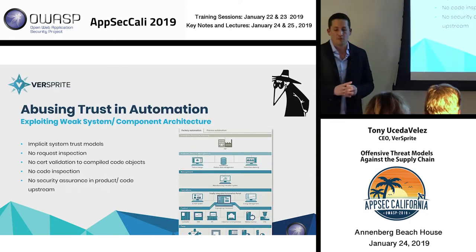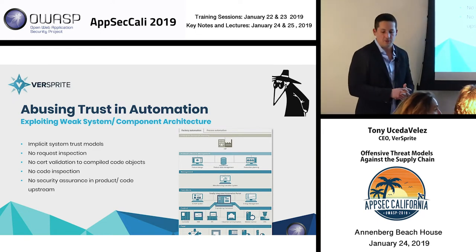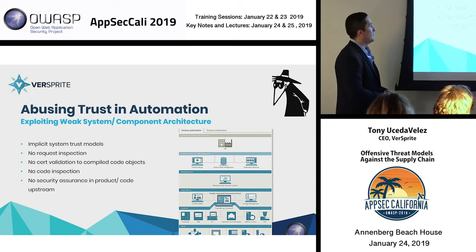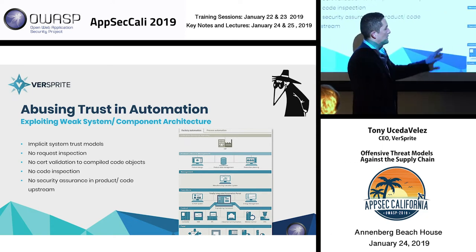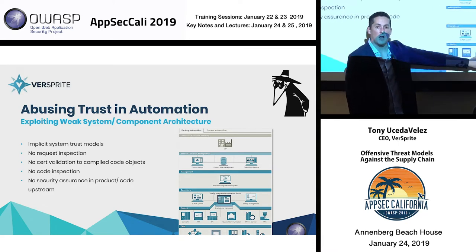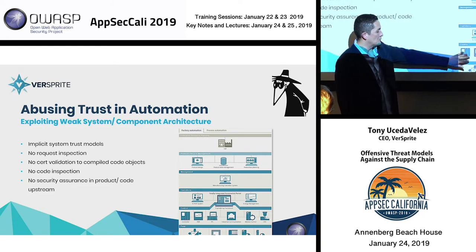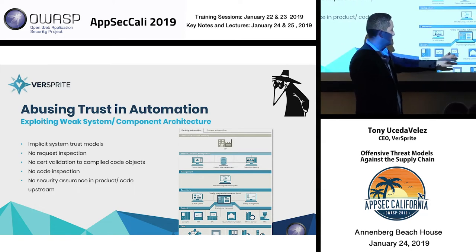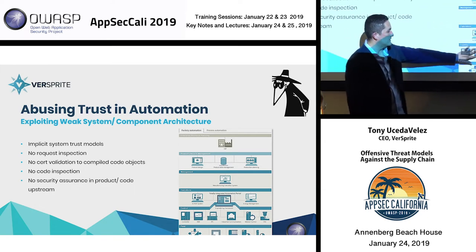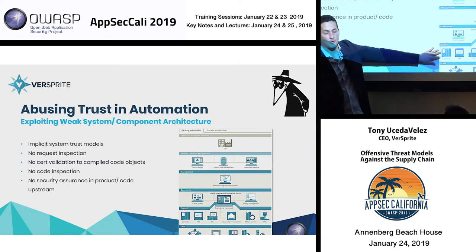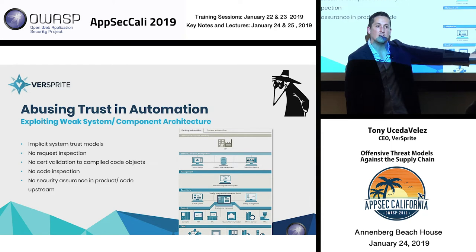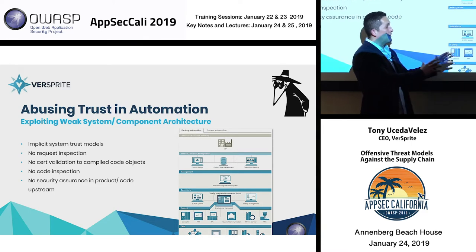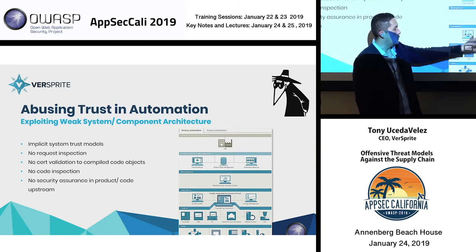In workflow automations that exist in manufacturing especially, there are inherent weaknesses that cyber criminals can take advantage of — understanding the components that can be compromised from an offensive model. Knowing that there are controllers, human machine interfaces, and inter-process communications that exist, we want to get into these areas because it's a great tier for repudiation. If we can infiltrate the supply chain of these devices and components, it allows us to affect the inner operations of these components relative to other systems.